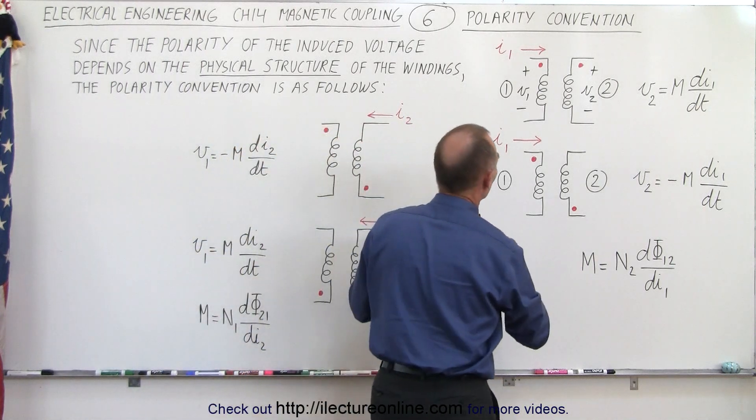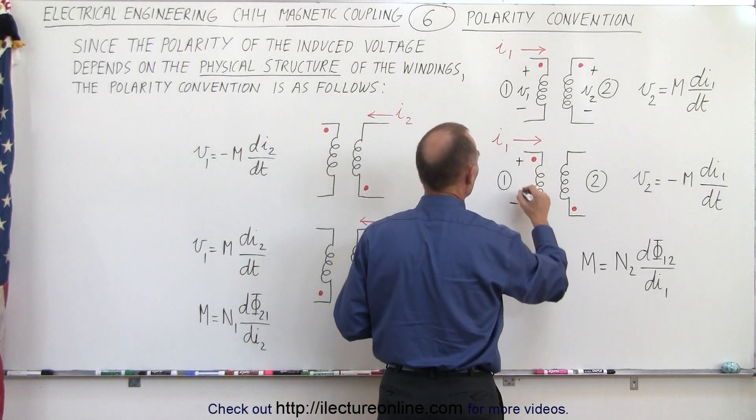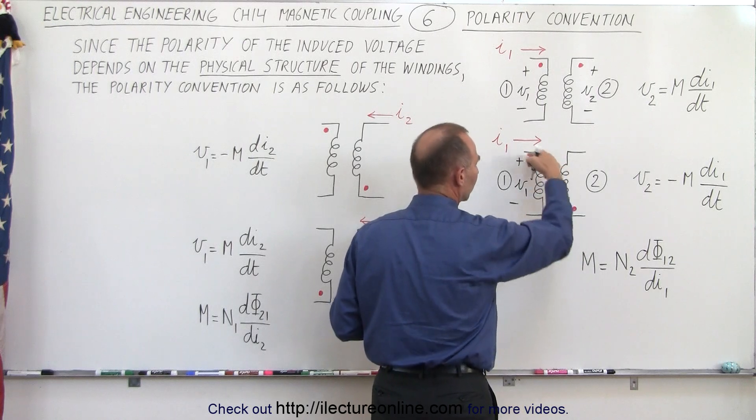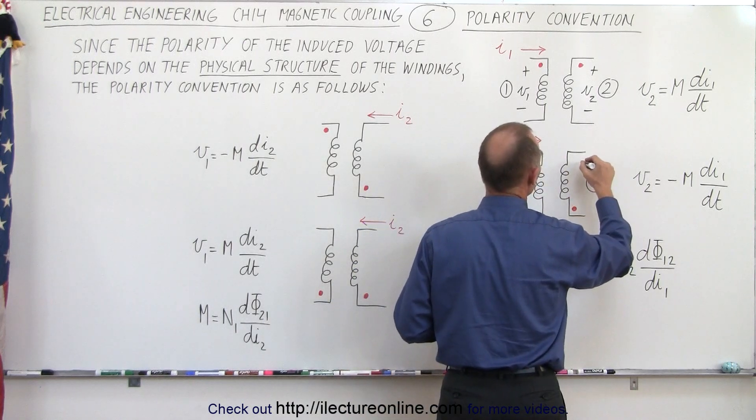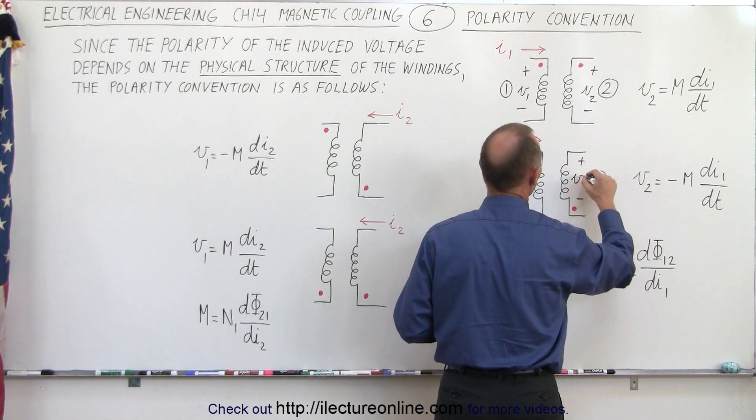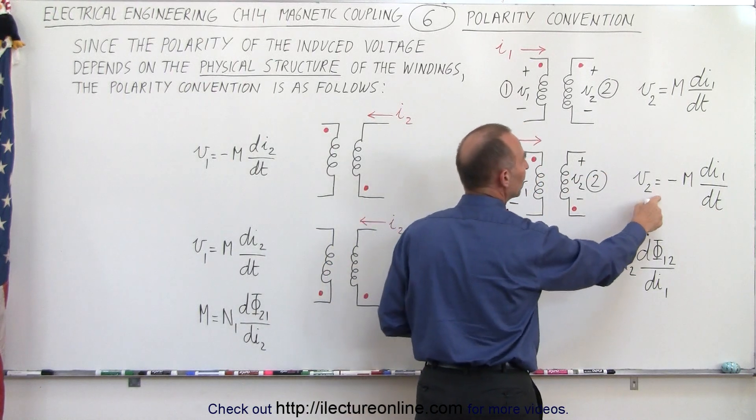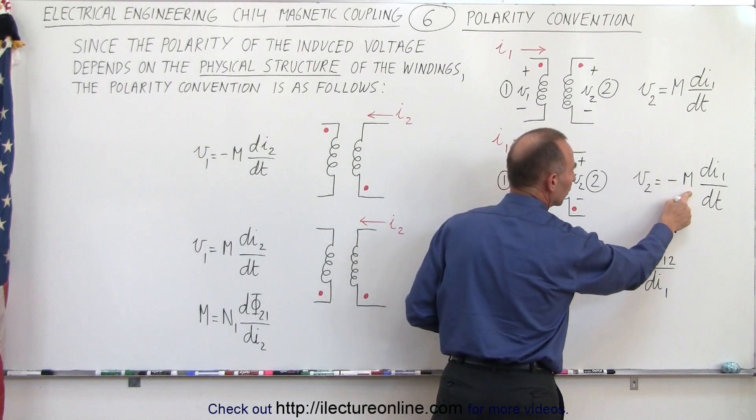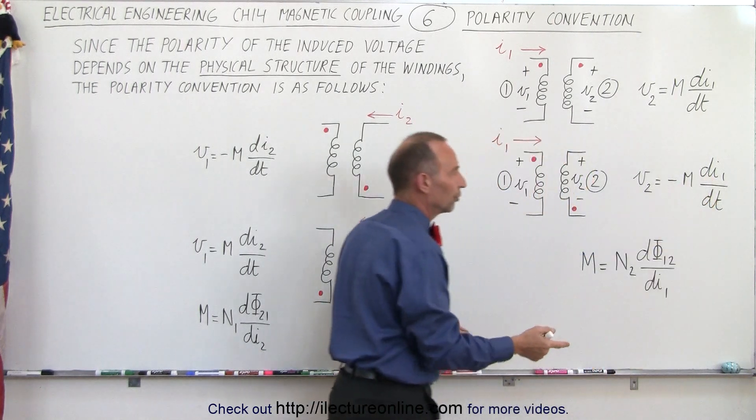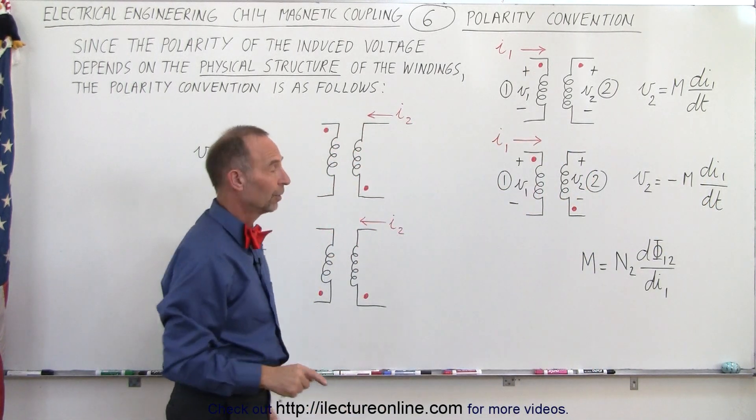And then you can see here when the voltage for V1 is like this and we have the dots across like that, then you can see that the polarity of the voltage V2 is opposite to the polarity of voltage V1. And we can then say that V2 is equal to the negative of the mutual inductance times the rate of change that occurred in one with respect to time.